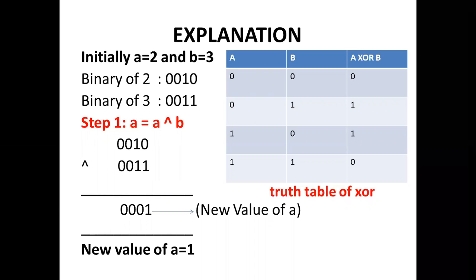Step 1, A equal to A XOR B. A is 2 and B is 3. 2 in binary is 0010 and 3 in binary is 0011. Now, we have to perform bitwise XOR.